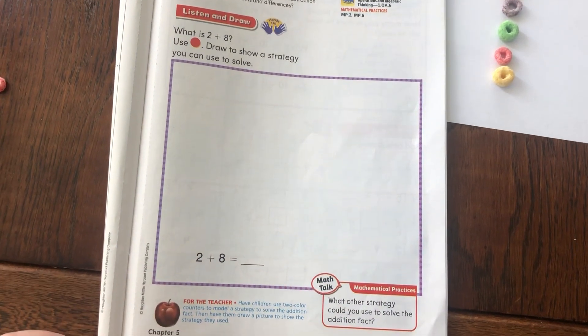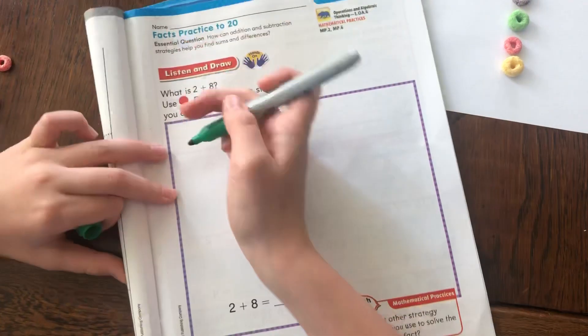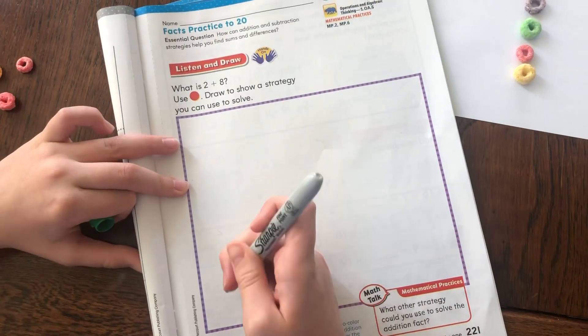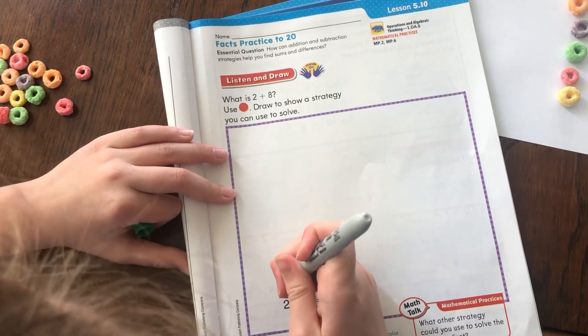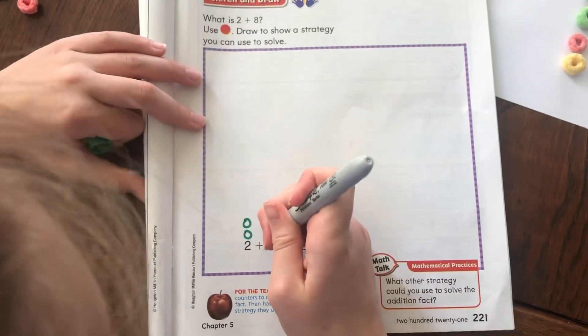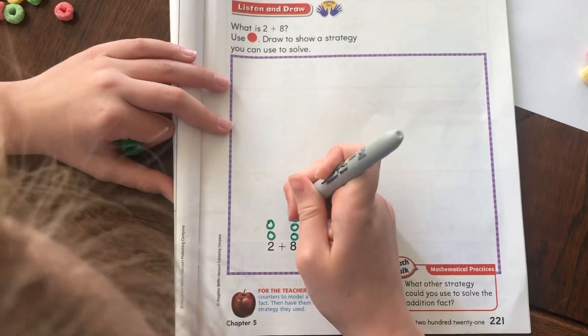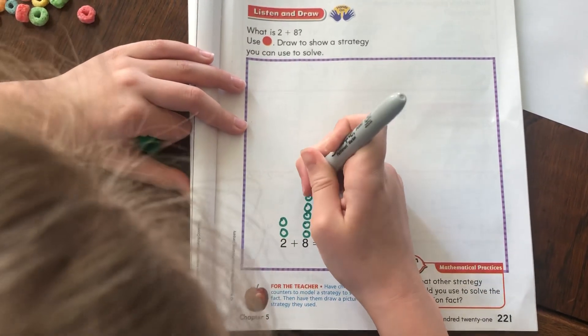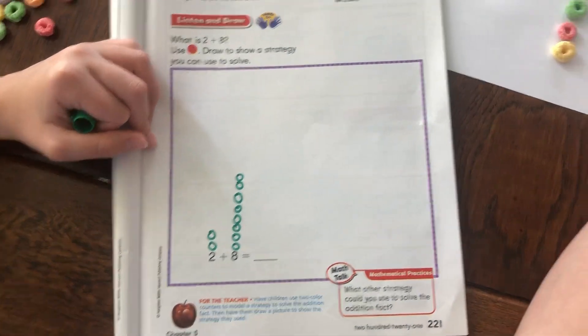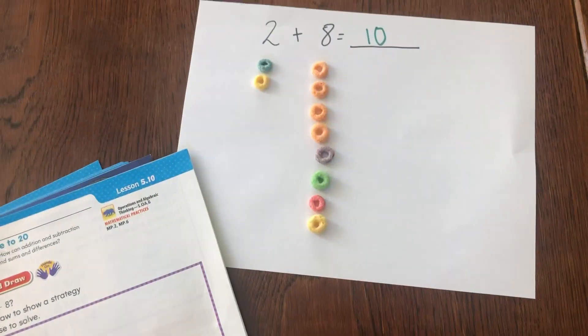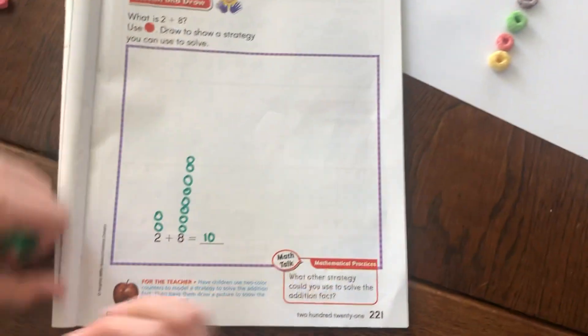So will you draw the model of your fruit loops, please? Yeah, okay, so since it has 2, I'm just going to put them above the number, since there's no room under. 1, 2, and 1, 2, 3, 4, 5, 6, 7, 8. And since we solved the problem over here, we know we got 10. So then, you'd write 10 right there.